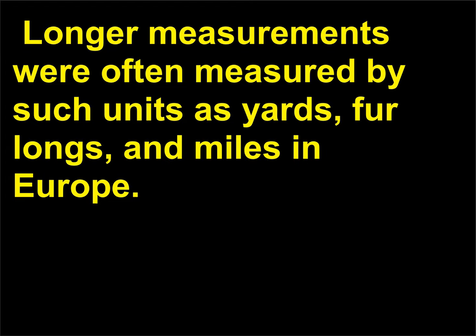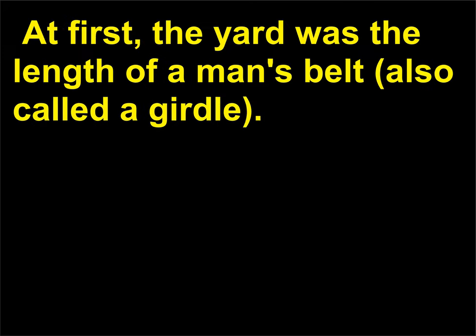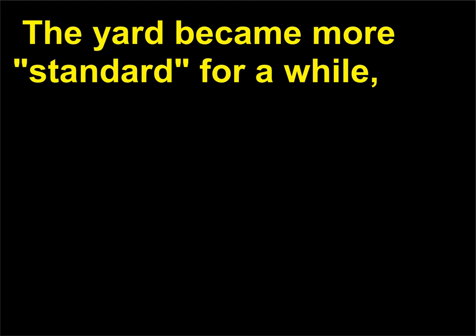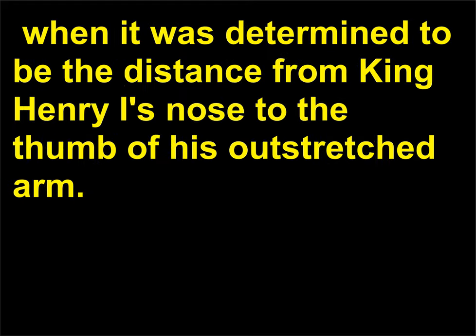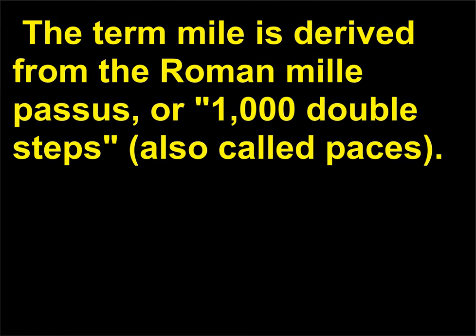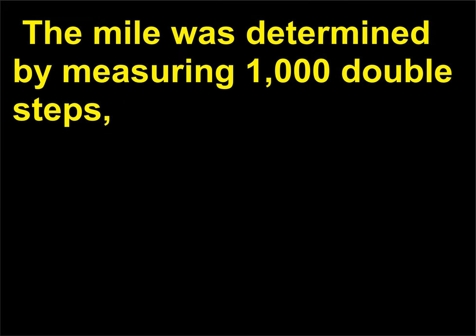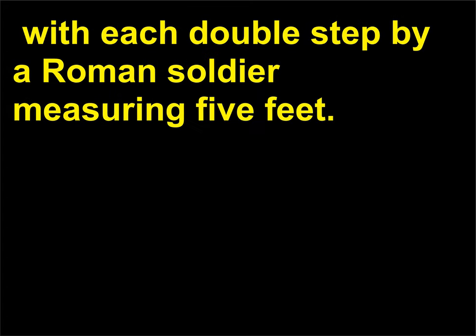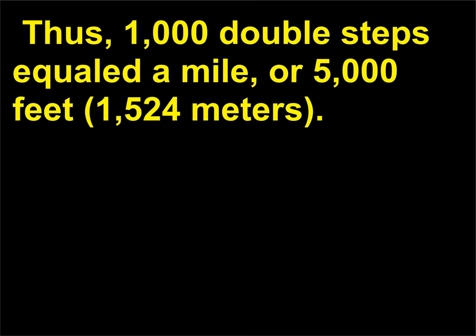Longer measurements were often measured by such units as yards, furlongs, and miles in Europe. At first, the yard was the length of a man's belt, also called a girdle. The yard became more standard when it was determined to be the distance from King Henry I's nose to the thumb of his outstretched arm. The term mile is derived from the Roman mille passus, or 1,000 double steps, also called paces. The mile was determined by measuring 1,000 double steps, with each double step by a Roman soldier measuring 5 feet. Thus, 1,000 double steps equaled a mile, or 5,000 feet, or 1,524 meters.